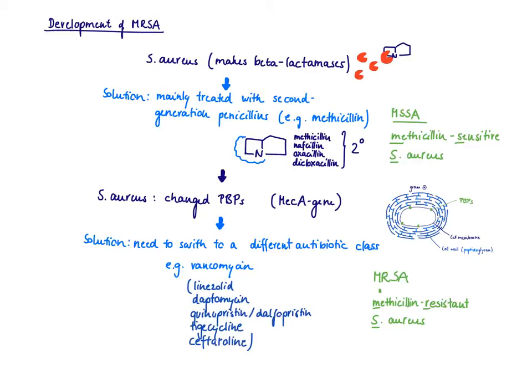You could, for example, use vancomycin, because it's another cell wall synthesis inhibitor which works slightly different, which has a different target. Or you can use any of those drugs that I have listed here.